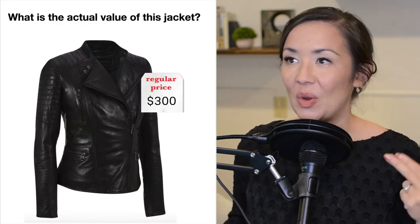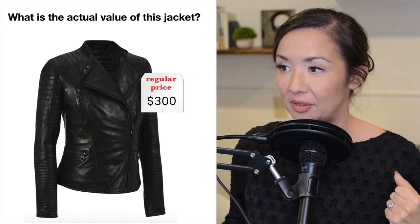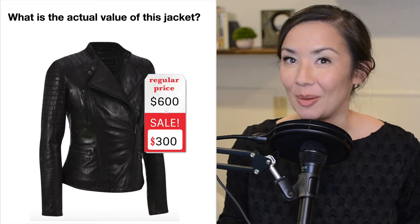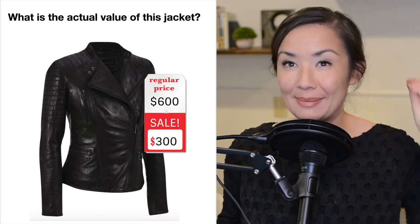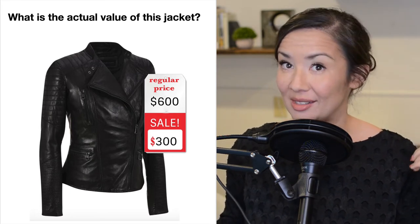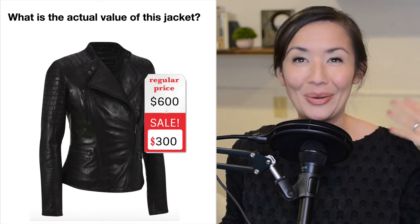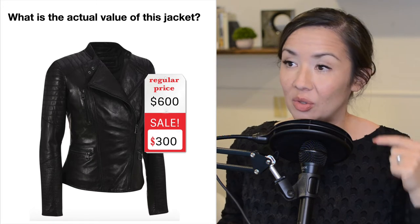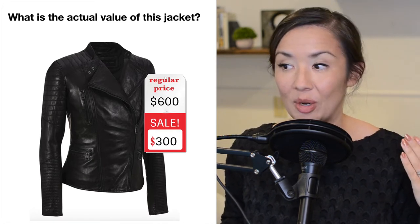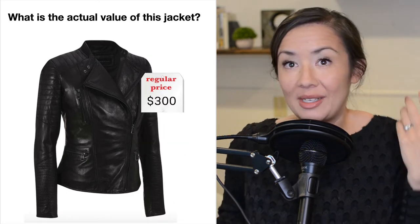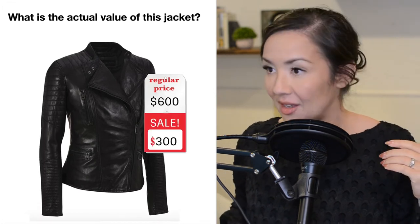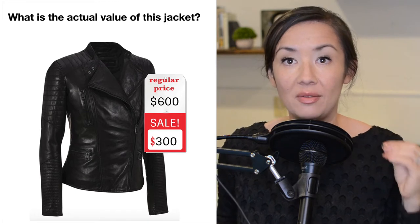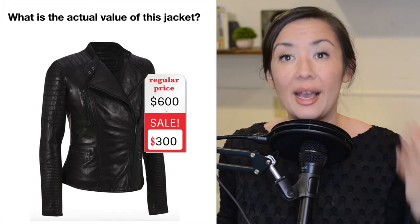Let's look at a few more examples. What is the actual value of this jacket? Decide for yourself. Do you think it's $300? Do you think it's a little more or less than that? You've probably seen this many times in stores where there's a massive price drop. The truth is, the lower price is usually just the regular old price, but you see the difference and you think it's a massive value. So when you think of the actual value of this jacket, you'll probably say somewhere between $300 to $600, but for the marked-down version, you might say $300 or a little bit less.